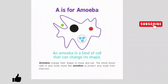A is for amoeba. An amoeba is a kind of cell that can change its shape. Amoebas change their shape to move and eat. The white blood cells in your body move like amoebas to protect your body from infection.